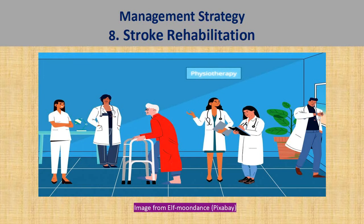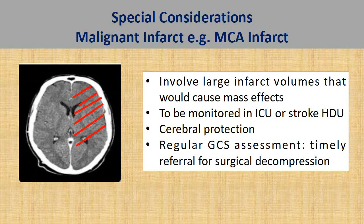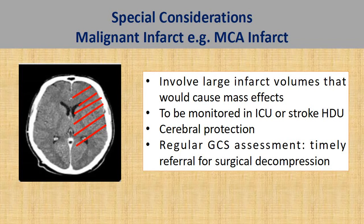Most importantly, all patients with acute ischemic stroke will receive inpatient physiotherapy or inpatient rehabilitation before discharge. Certain stroke phenotypes require special considerations. The first is malignant infarct — a good example is MCA infarct. We call this malignant because a large volume infarct gives rise to significant cerebral edema, ultimately contributing to raised intracranial pressure. These patients should be monitored in HDU or ICU and given necessary cerebral protection. If raised intracranial pressure contributes to a drop in GCS, refer to the neurosurgical team for consideration of decompressive craniectomy.